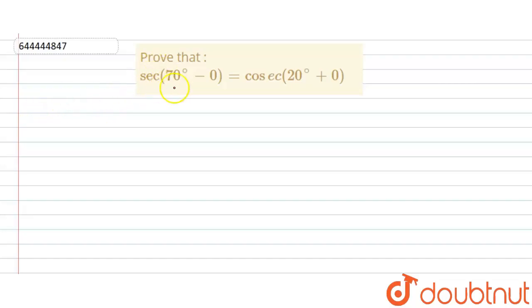In this question, we have to prove that sec of 70 degrees minus 0 equals cosec of 20 degrees plus 0.